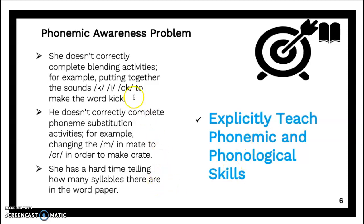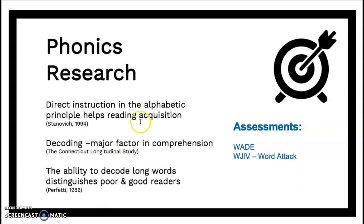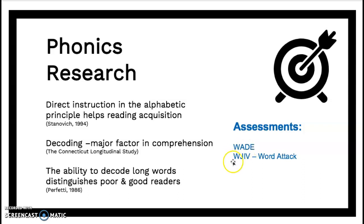If it's not a phonemic awareness problem, then you want to find out: is it a phonics problem? Research has shown us that direct instruction in the alphabetic principle helps reading acquisition. The Connecticut Longitudinal Study found that decoding is a major factor in comprehension, and the ability to decode long words distinguishes poor and good readers. Some assessments you may do to find out if it's a phonics issue include the WADE — the Wilson Assessment of Decoding and Encoding — which we did in class. A formal assessment that can give you more detail would be the Woodcock-Johnson 4, specifically the subtest word attack.